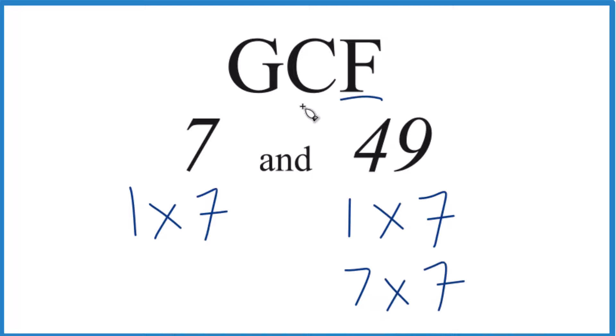Now we've got our factors, let's see what's in common. 1 goes into 7, and 1 goes into 49 evenly, so that's a common factor.